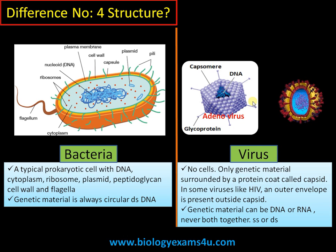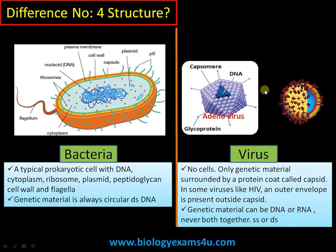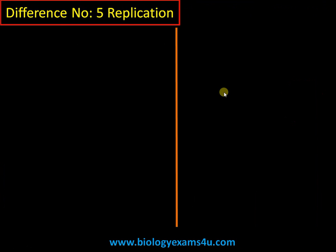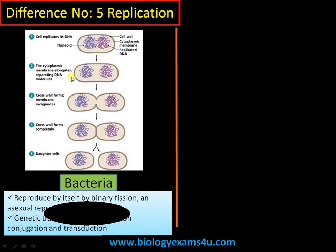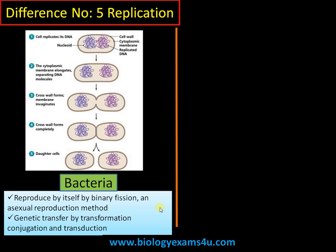The genetic material in a virus can be DNA or RNA — never both — and it can be single-stranded or double-stranded. Difference number five is regarding replication. Bacteria normally divide by binary fission, a simple asexual reproduction method. Bacteria can divide every 20 minutes, reaching millions in numbers within 24 hours. Other mechanisms of gene transfer include transformation, conjugation, and transduction.